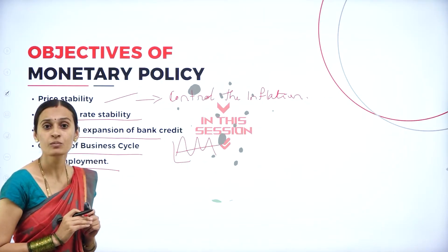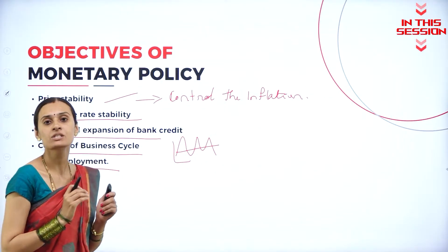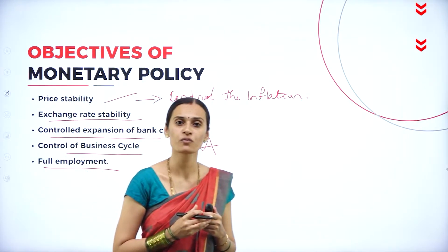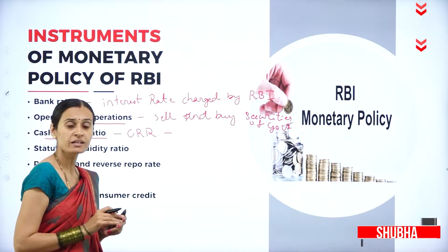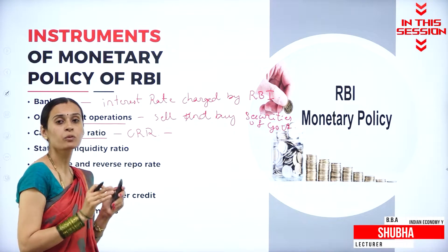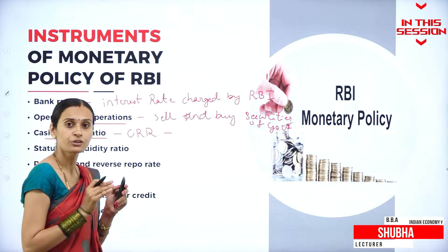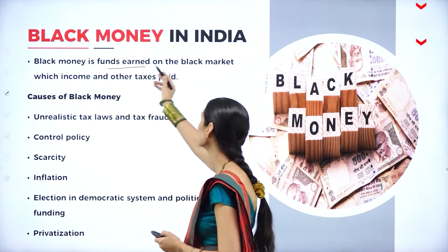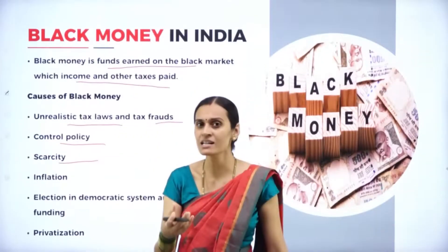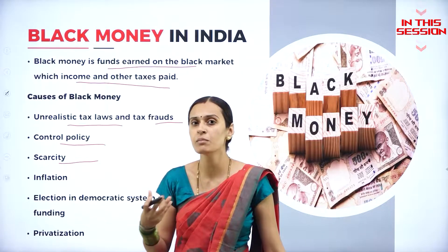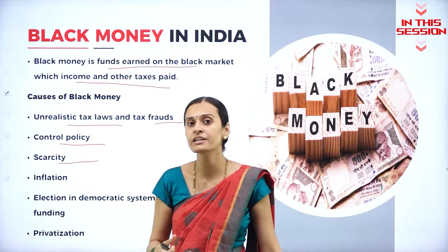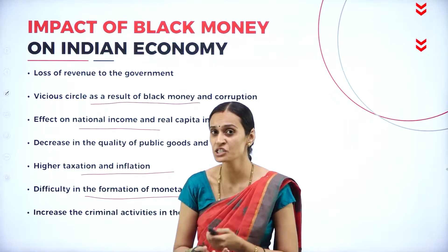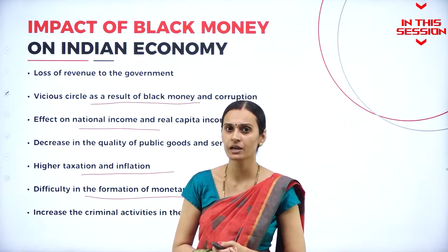Maintenance of full employment system which brings to increasing the per capita income and national income of our country. Every commercial bank has to maintain some amount of total deposit in the form of cash reserves. Black money is funds earned on the black market. Scarcity which can create the demand and demand which can create the highest prices. It is very difficult to measure the national income and per capita income.